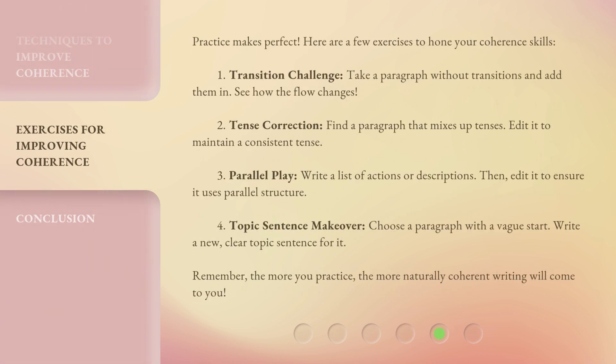Practice makes perfect. Here are a few exercises to hone your coherence skills. 1. Transition challenge: take a paragraph without transitions and add them in — see how the flow changes. 2. Tense correction: find a paragraph that mixes up tenses and edit it to maintain a consistent tense. 3. Parallel play: write a list of actions or descriptions, then edit it to ensure it uses parallel structure.